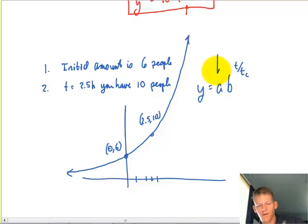So here we go. So the A value is the initial value. So this is nice and easy. This is going to be 6.